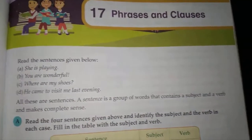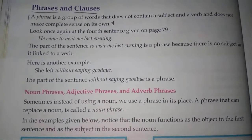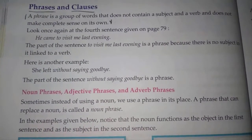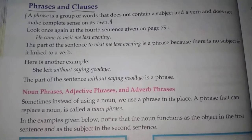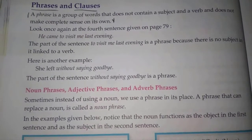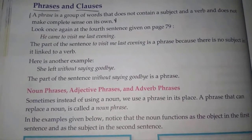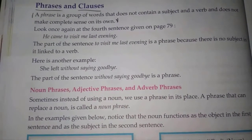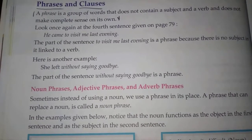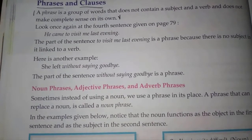Write question number one: What is a phrase and a clause? Give two examples of each. First heading — Phrase: A phrase is a group of words that does not contain a subject and a verb and does not make complete sense. For example: 'in the evening.'